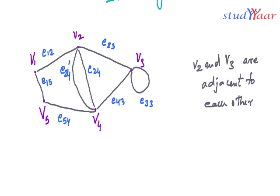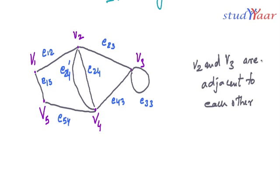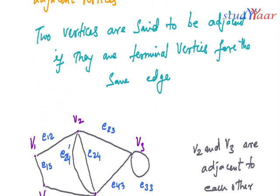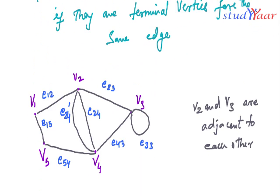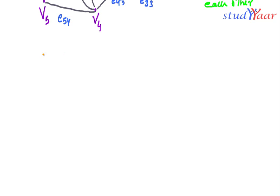Why is that so? Because both of them are terminal vertices for the edge e23. That is the reason V2 and V3 are adjacent to each other. The same is the case with V3 and V4, because e43 is having them as its terminal vertices. Same is the case with V4 and V2.